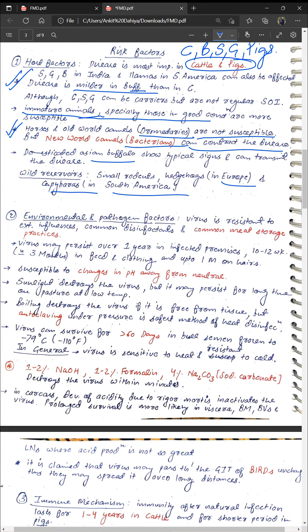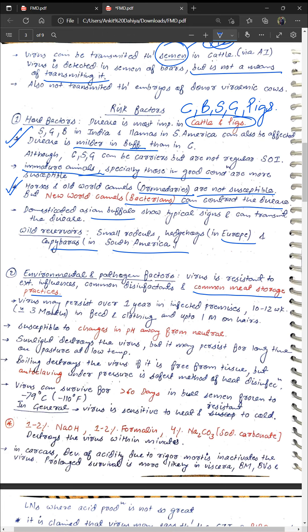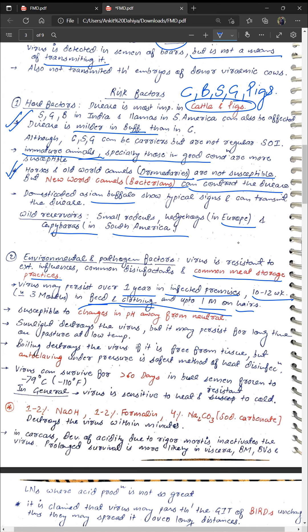Regarding environmental and pathogenic factors: the virus is resistant to external influences, common disinfectants like phenol, and common meat storage practices including freezing. Virus may persist up to one year in infected premises, up to three months in feed, and up to one month on hair. It is susceptible to pH changes away from neutral. Sunlight destroys it effectively, but it may persist for long times on pasture at low temperatures. Boiling destroys the free virus; autoclaving is the best method of heat sterilization.